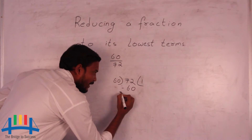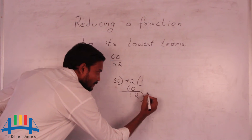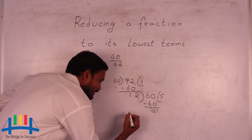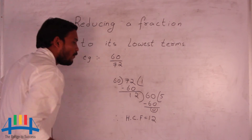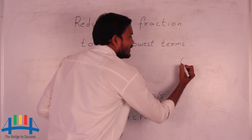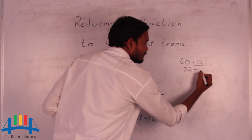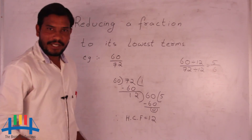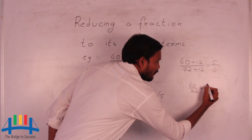Then with 12 we divide 60. We know that 12 times 5 is nothing but 60, and the remainder is 0. So the HCF of the numerator and denominator is 12. This means 12 is a common factor of 60 and 72. We divide both numbers by the common factor 12: 12 times 5 is 60 and 12 times 6 is 72. So the lowest term of 60 by 72 is nothing but 5 by 6.